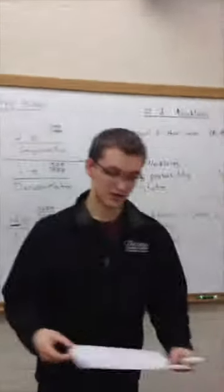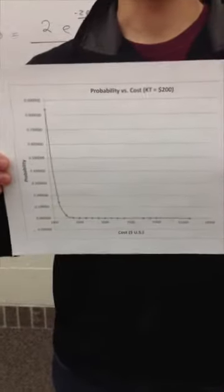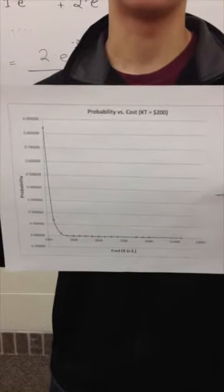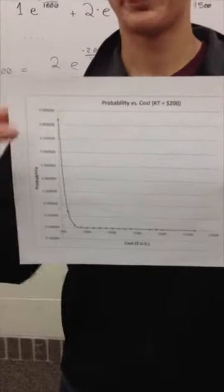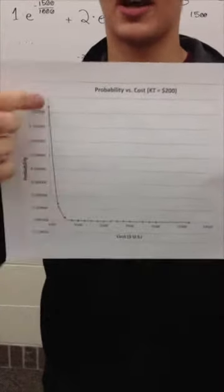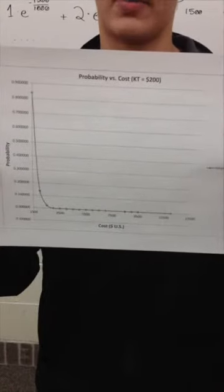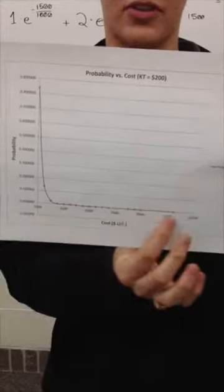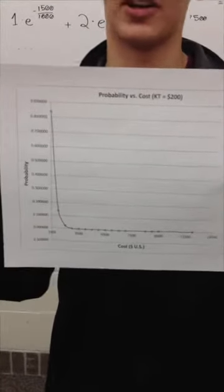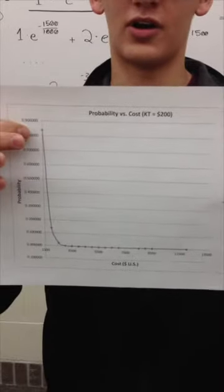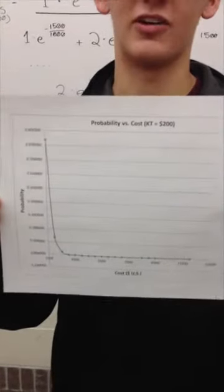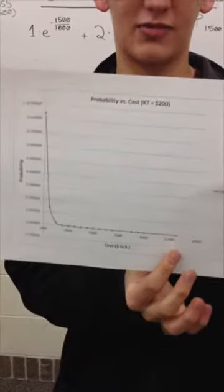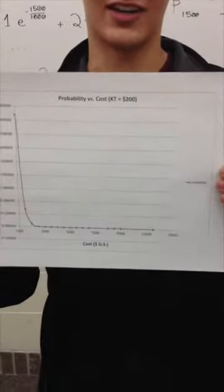For kT = $200 — very little energy available, analogous to a chemical at very low temperature — there's an extremely high probability of being in the cheapest or lowest energy state, dropping off very rapidly to essentially zero for all other states. With 10,000 necklaces at kT = $200, almost all would be the sapphire-sapphire-sapphire configuration, with virtually no likelihood of being in the diamond-diamond-diamond state.